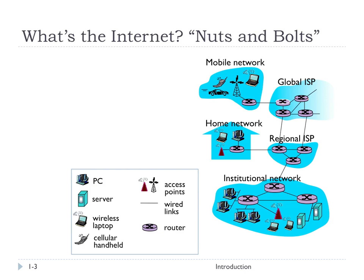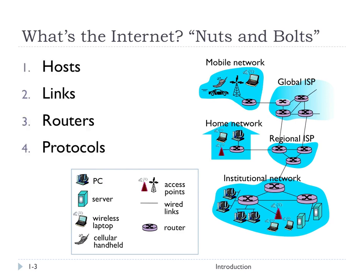What's the internet? This is how the authors of our book present the answer to this. If we were to look at what are the ingredients in this recipe, we could see the nuts and bolts of the internet as four things. First, hosts. Hosts are the devices that are on the internet.